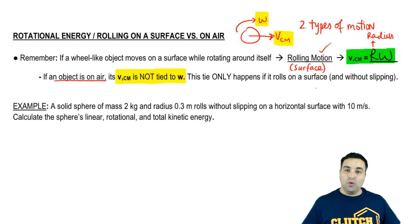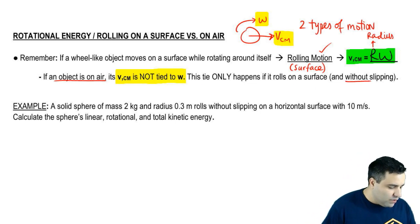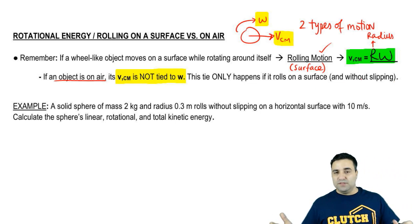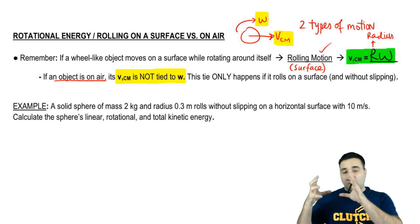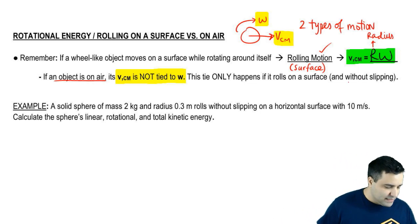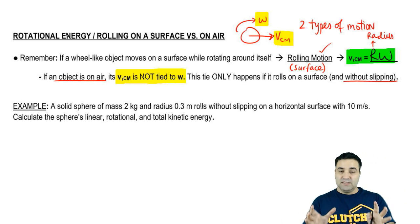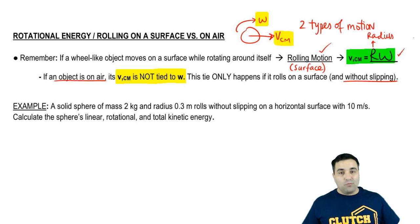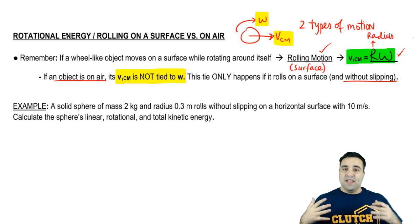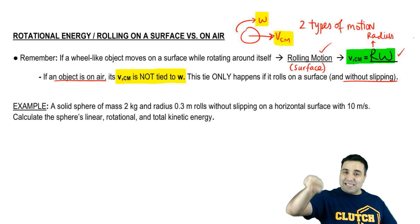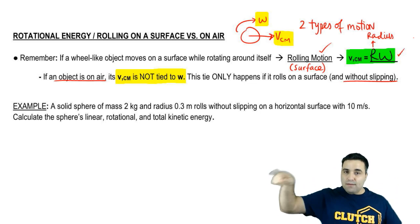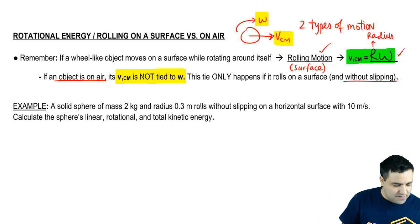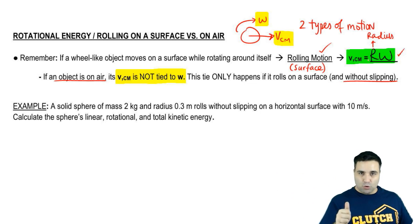This only happens if you're rolling on a surface and if you're rolling without slipping. Lucky for you, all problems in physics, at least for you guys, is going to be rolling without slipping. So you can just assume that to be the case. So to summarize, if you are rolling on a surface, this equation applies. If you are not rolling on a surface, this equation does not apply. So if you throw a ball and it rolls on the floor, that would apply. But let's say if you throw a baseball and it's spinning through the air and moving, you cannot say that V_cm equals R omega. That equation doesn't work.